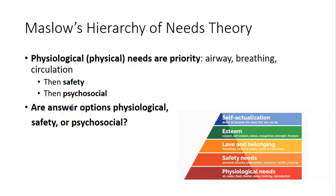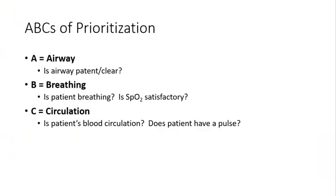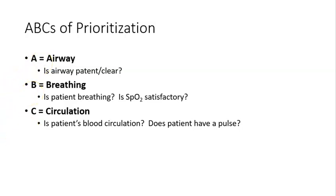When answering a question, look at the options and ask yourself: are they physiological or physical? Is it a safety answer option, or is it a psychosocial, fluffy feelings type of option? If you get down to multiple physical answer options, you then have another way to prioritize those using your ABCs. Airway is the priority, breathing would be next, followed by circulation.